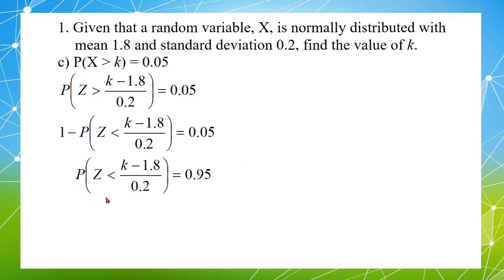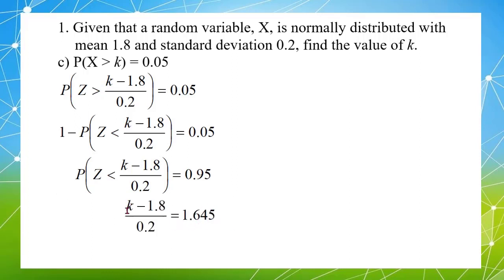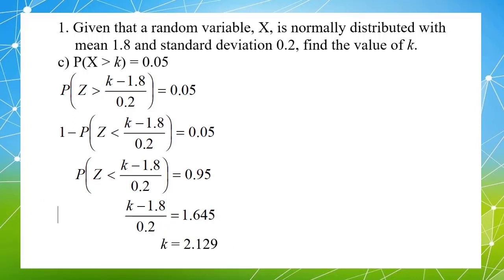Now I am ready to use the table. Checking the table with 0.95, I find the Z value is 1.645. From here, I calculate K equal to 2.129.